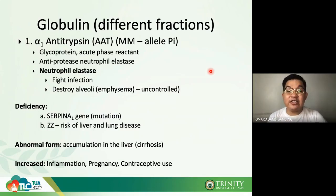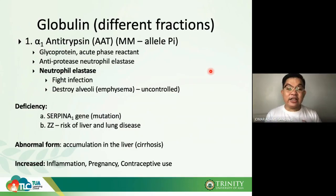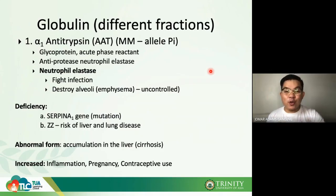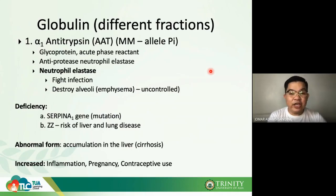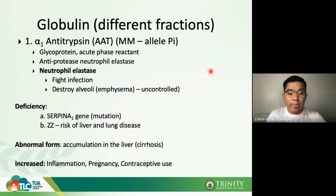Alpha-1 antitrypsin is important because it neutralizes neutrophil elastase. While neutrophil elastase does fight infection, in severe cases an uncontrolled increase can destroy the alveoli, causing emphysema. There are genetic deficiencies in alpha-1 antitrypsin, such as the SERPINA1 gene mutation and ZZ mutation, which carry a risk of liver and lung disease.